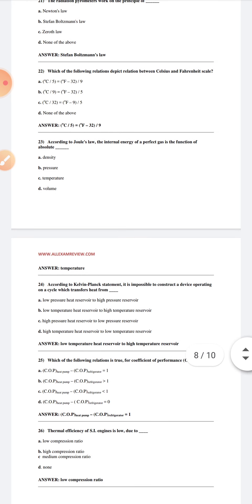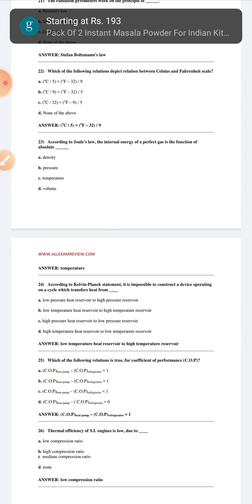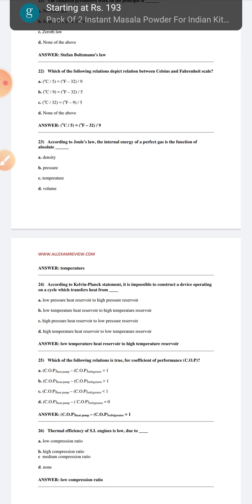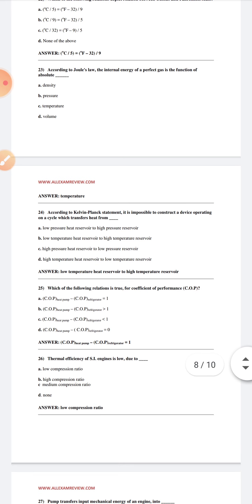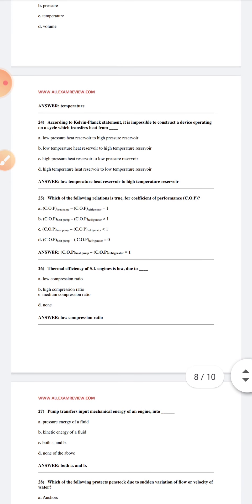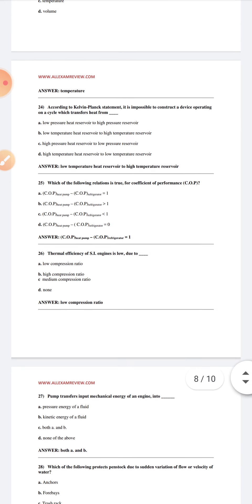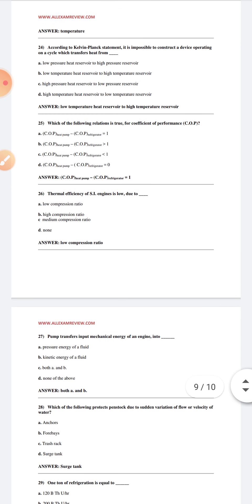According to Kelvin-Planck's statement, it is impossible to construct a device operating a cycle which transfers heat from lower temperature heat reservoir to high temperature. In which of the following relation is true for the coefficient of performance? COP heat pump minus COP refrigerator is equal to 1. The thermal efficiency of SI engine is low due to low compression ratio.